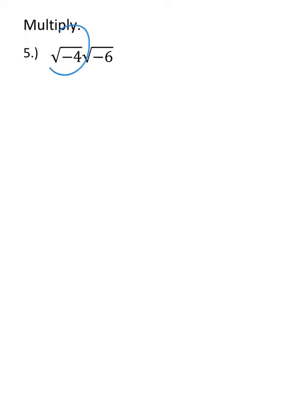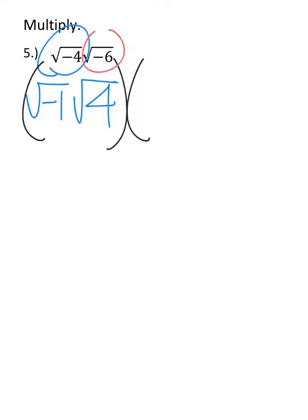So I'm going to rewrite the square root of negative 4 as the square root of negative 1 times the square root of 4, that's being multiplied by, bring out the negative from the square root, so that's going to be the square root of negative 1 times the square root of 6.